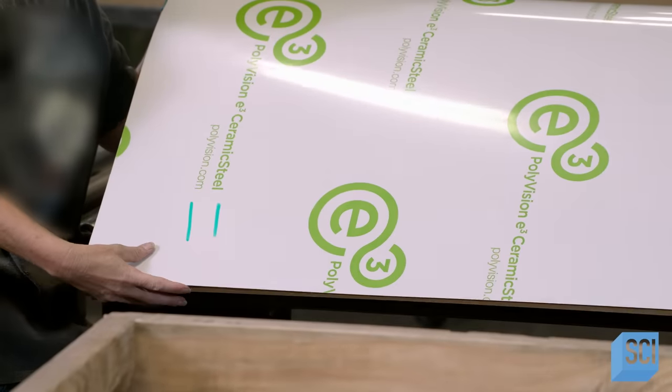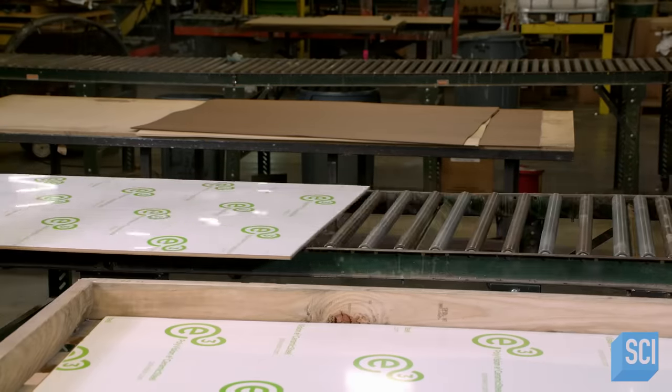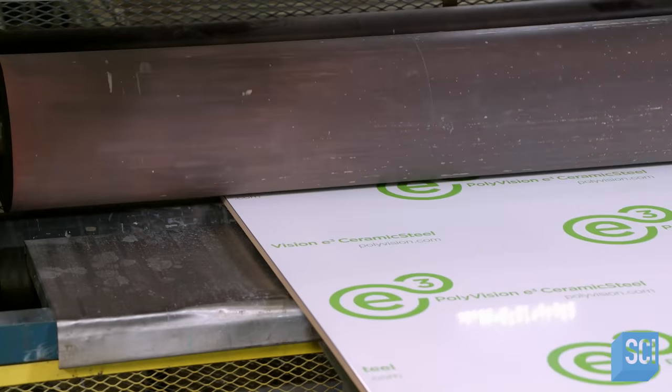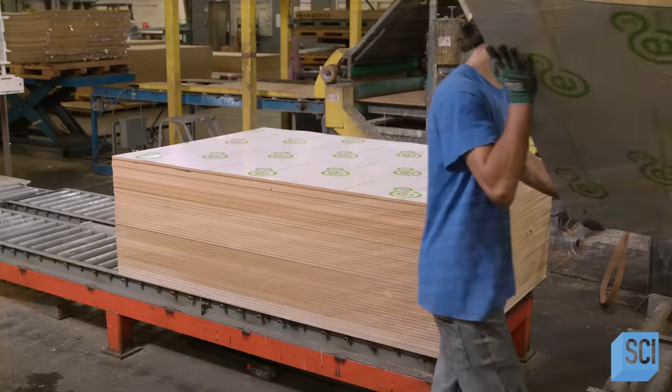Technicians work carefully to ensure they don't touch the pressure-sensitive surface with their fingers. Then the board moves through the steel rollers to press the porcelain steel flat and remove any trapped air.